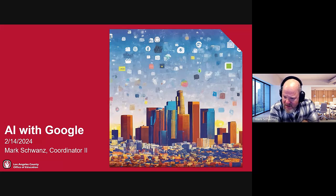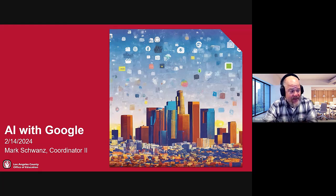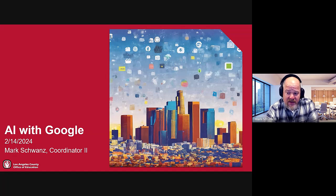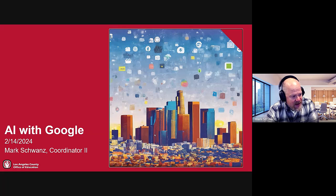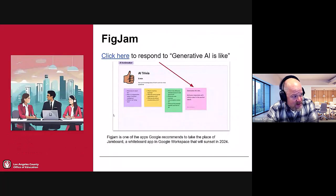I started to think about the implications of artificial intelligence and how we could use AI in the Google applications, both classic ones and new ones. I'm going to skip over to FigJam, which, by the way, is a whiteboarding app.